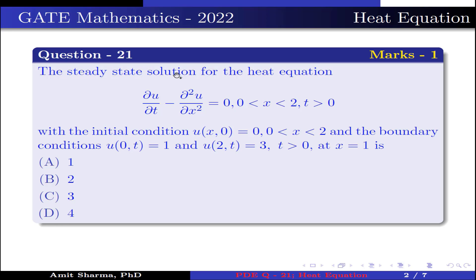The question is: find the steady state solution for the heat equation ∂u/∂t − ∂²u/∂x² = 0, where 0 < x < 2 and t > 0, with initial condition u(x, 0) = 0 where 0 < x < 2, and boundary conditions u(0, t) = 1 and u(2, t) = 3 where t > 0. The value at x = 1 is: option a) 1, option b) 2, option c) 3, option d) 4.